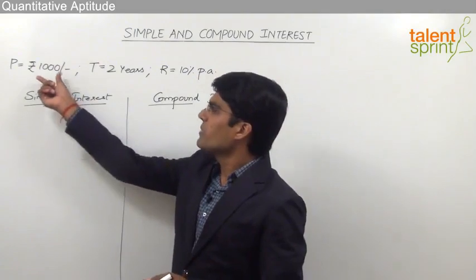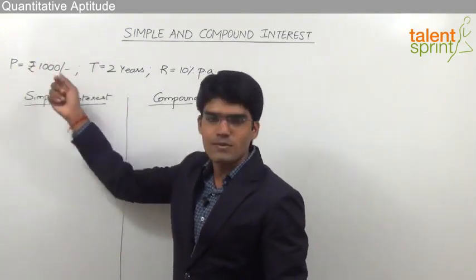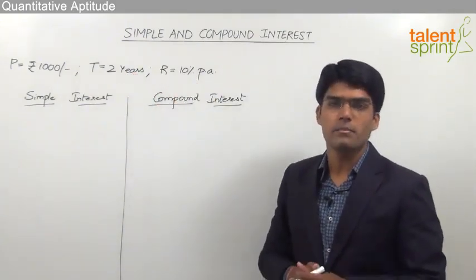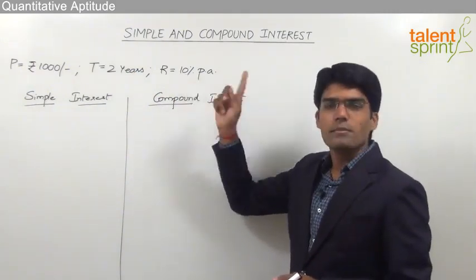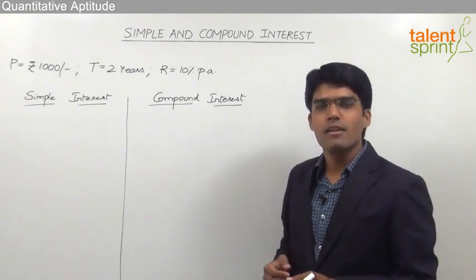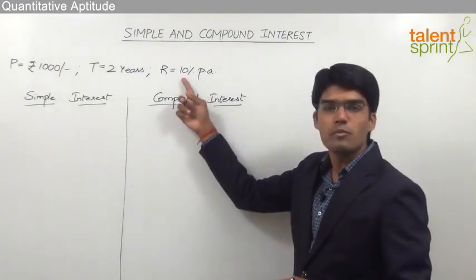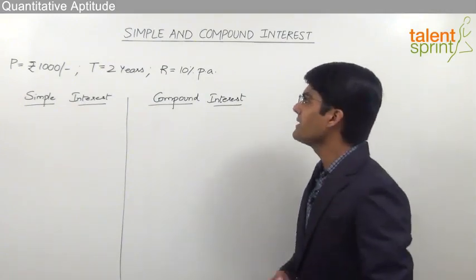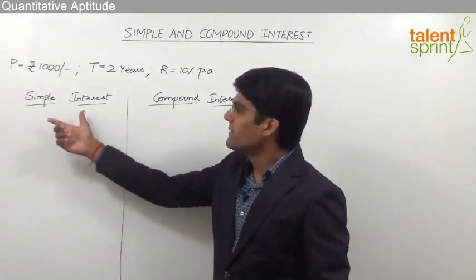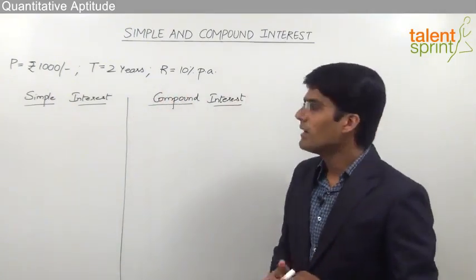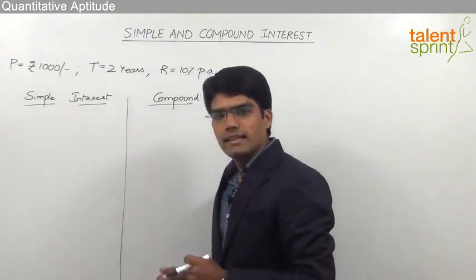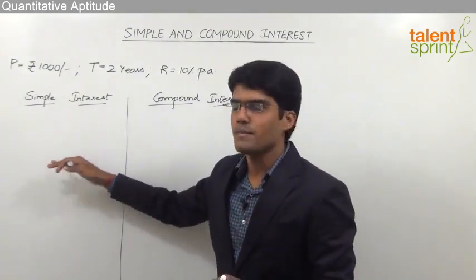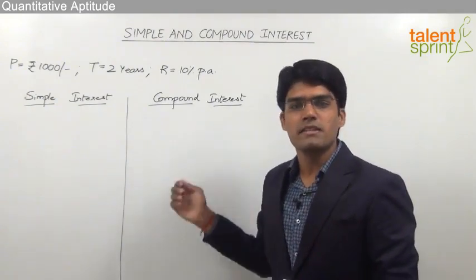Let us assume that an amount of 1000 rupees has been borrowed. So the principal is 1000 rupees, for a period of 2 years, and the rate of interest is 10% per annum. That means every year 10% of the principal amount has to be paid — for every 100 rupees borrowed, the person has to pay 10 rupees per year. Let us calculate simple interest and compound interest for each year separately to understand the difference.